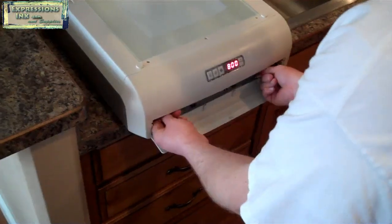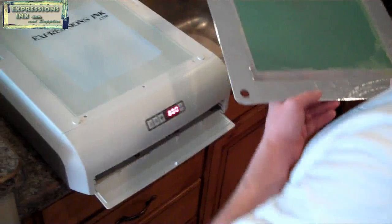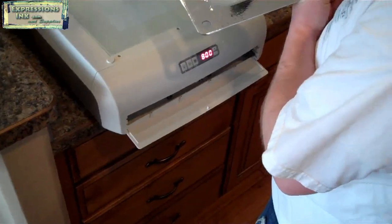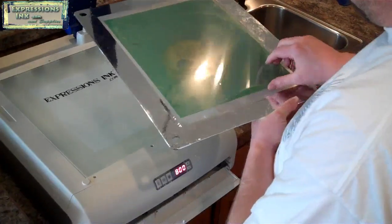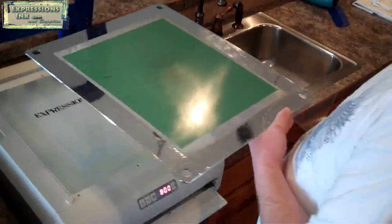Then we'll pull our screen out of the drying rack. As you recall, when we put that emulsion on, there was a shiny side to the film. That's just a clear protective layer, and we're going to peel that off because we don't need that anymore.